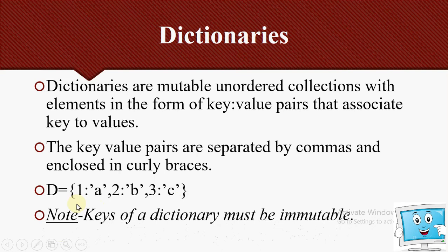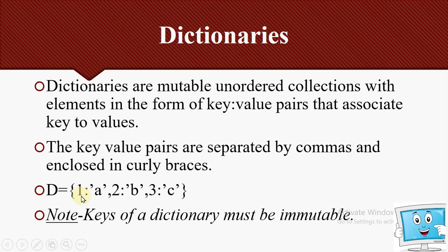One important point: the keys of a dictionary must be immutable — meaning we cannot change them. Immutable data types include integer and string. We cannot pass a list as a key because the list is mutable.